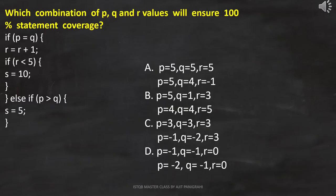The question is: which combination of p, q, and r values will ensure 100% statement coverage? These options are provided. Now let's analyze the code to get the correct answer.